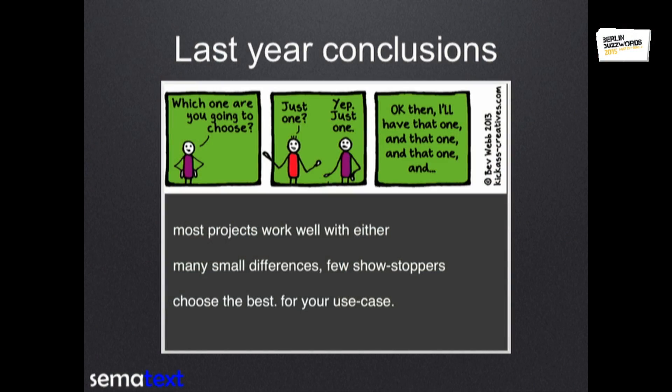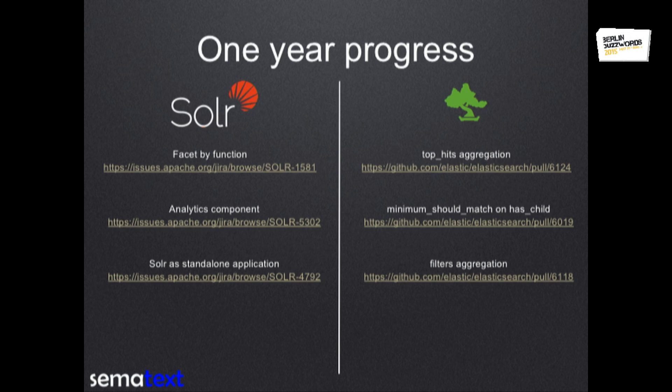We also compared the community engagement for both products — like committers, code, the mailing list activities, and stuff like that. Basically, the last year's conclusions were that most projects work well with both Solr and Elasticsearch. There are very few showstoppers that would say don't go Elasticsearch or don't go Solr, but there are a large number of small differences because those are different products based on Lucene.